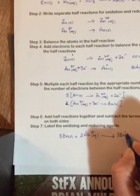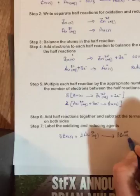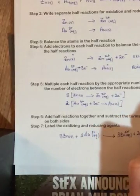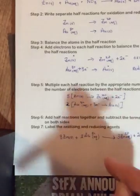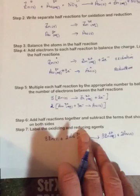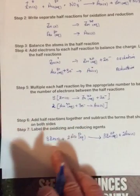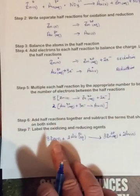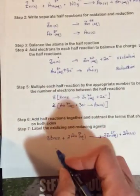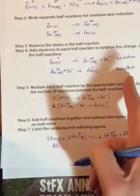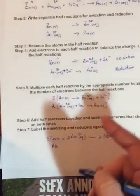Okay, last step: label the oxidizing and reducing agents. Well, zinc was being oxidized, and what's being oxidized is the reducing agent.